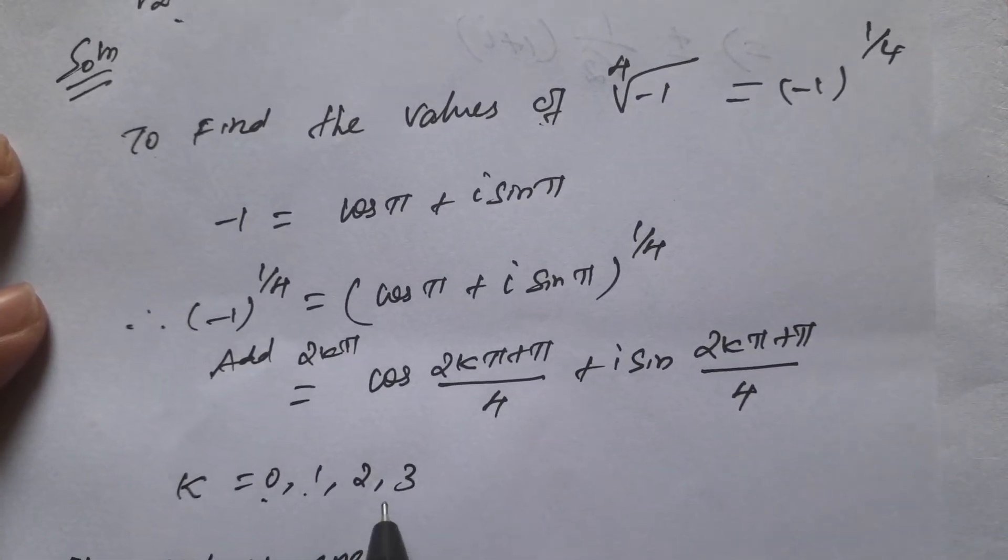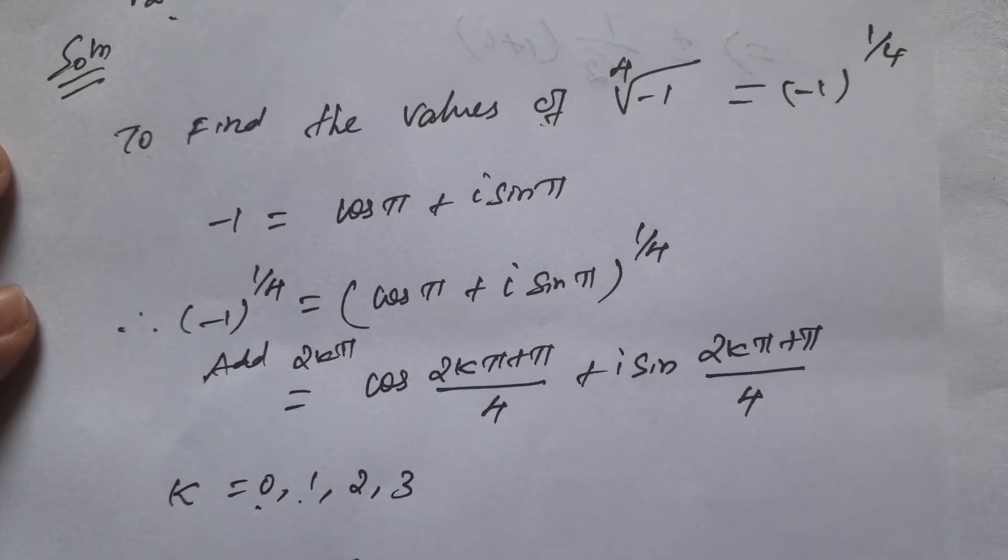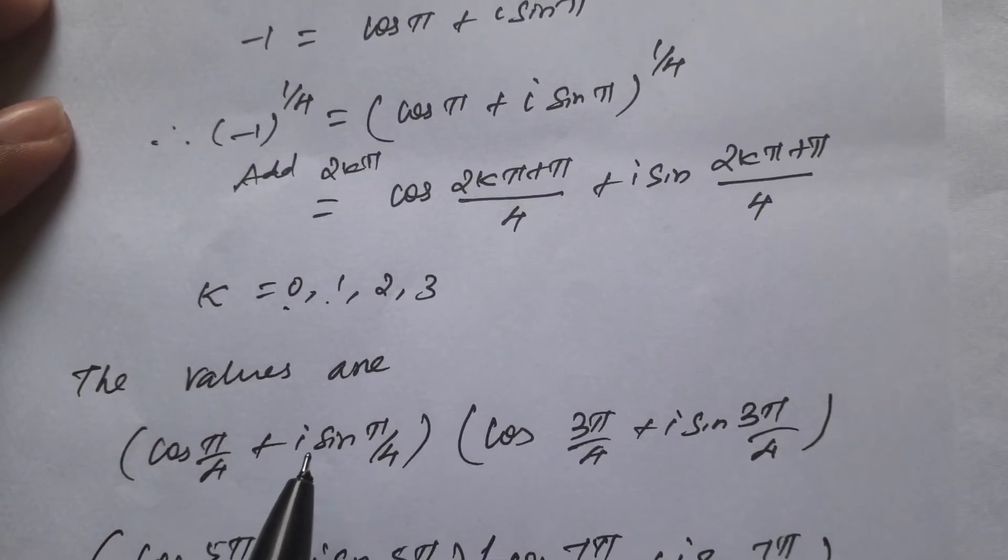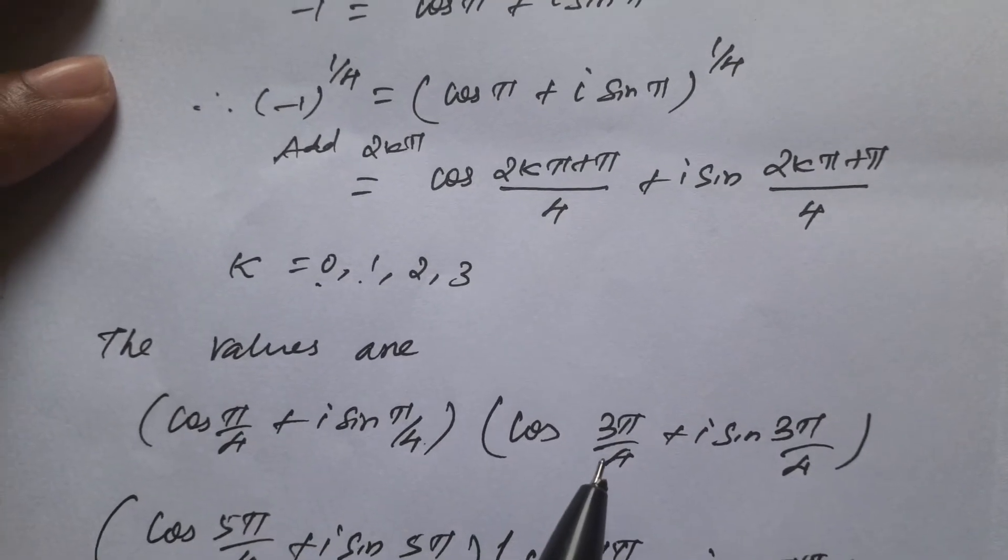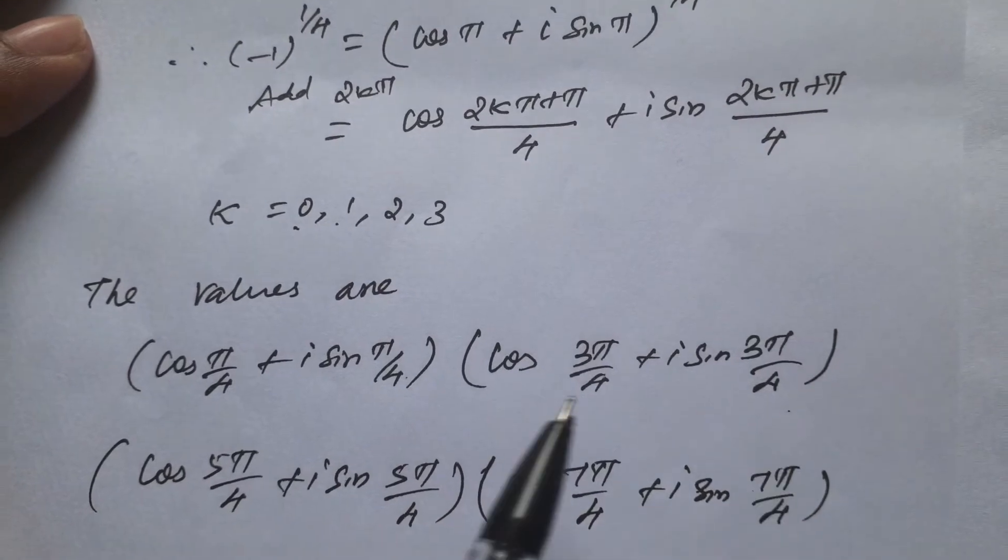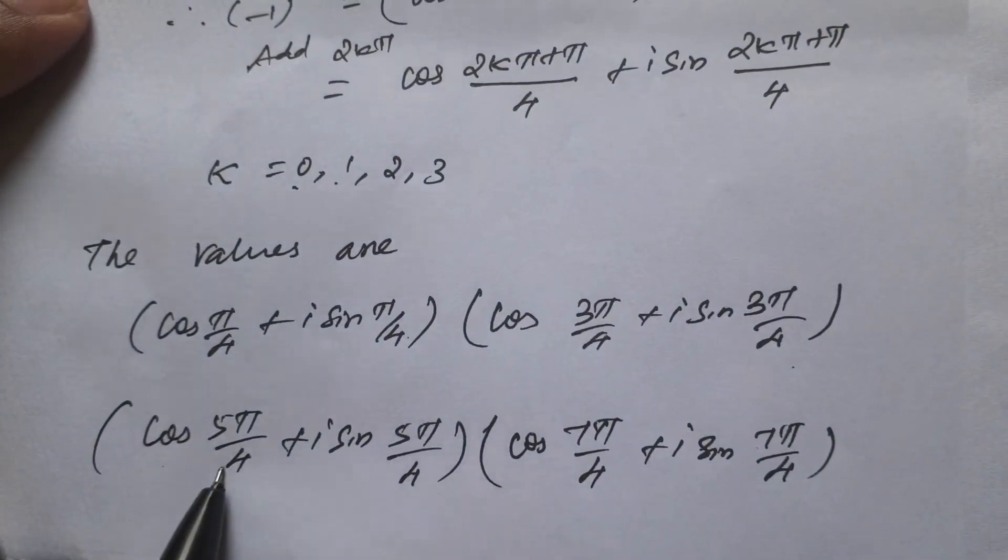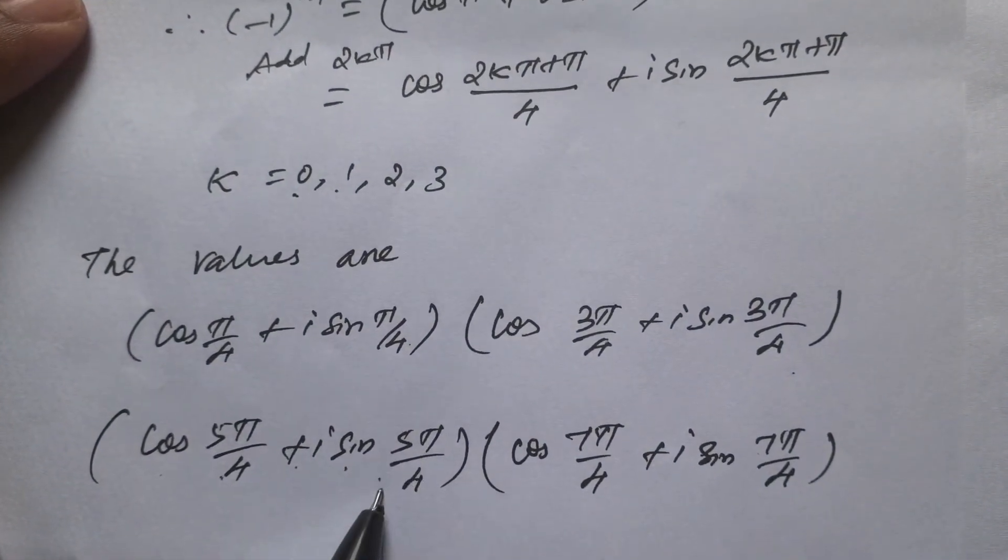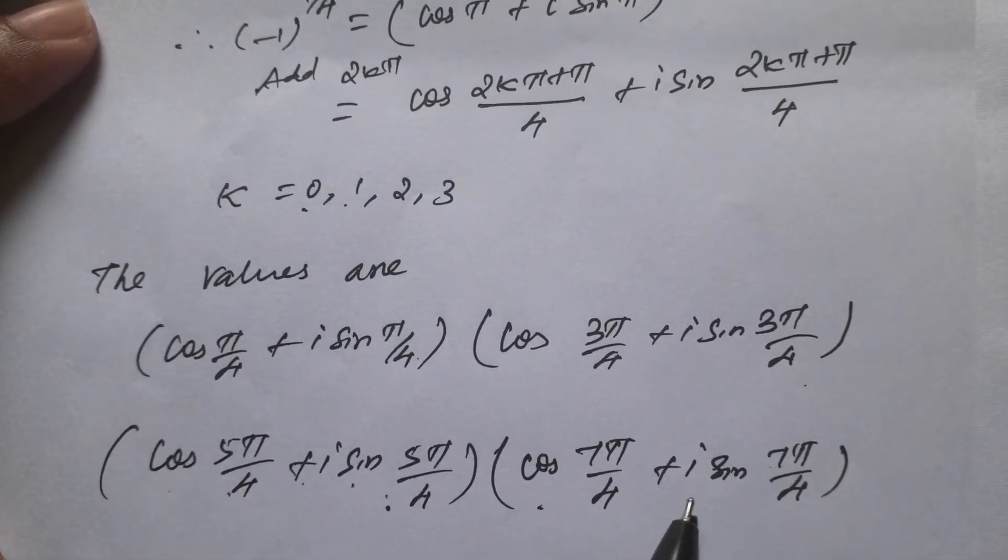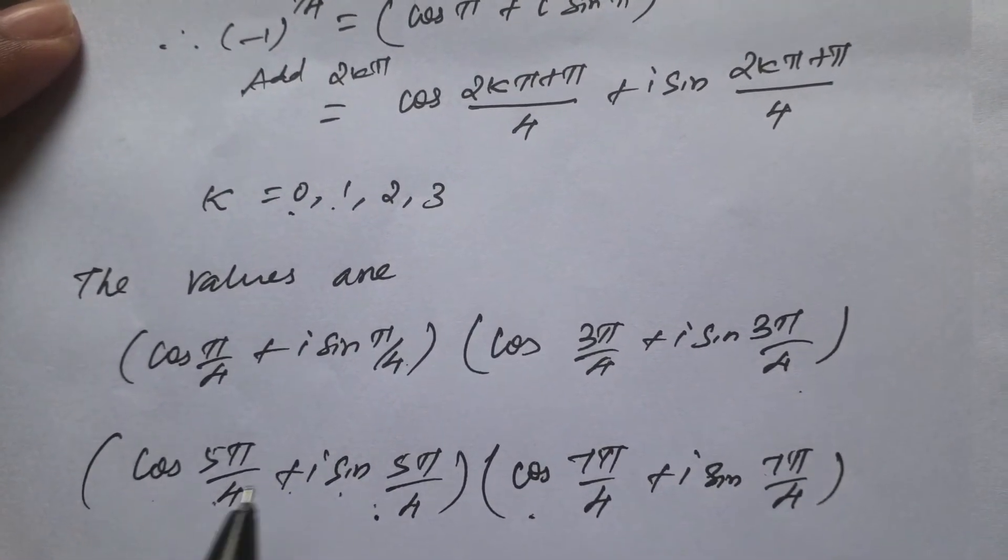So 2k π plus π by 4, cos of 2k π plus π by 4 plus i sin 2k π plus π by 4. Actually four values: zero start, 0, 1, 2, 3. The values are: first zero apply, cos π by 4 plus i sin π by 4. Next, cos 3π by 4 plus i sin 3π by 4. Two apply, cos 5π by 4 plus i sin 5π by 4. Next, 3 apply, cos 7π by 4 plus i sin 7π by 4.